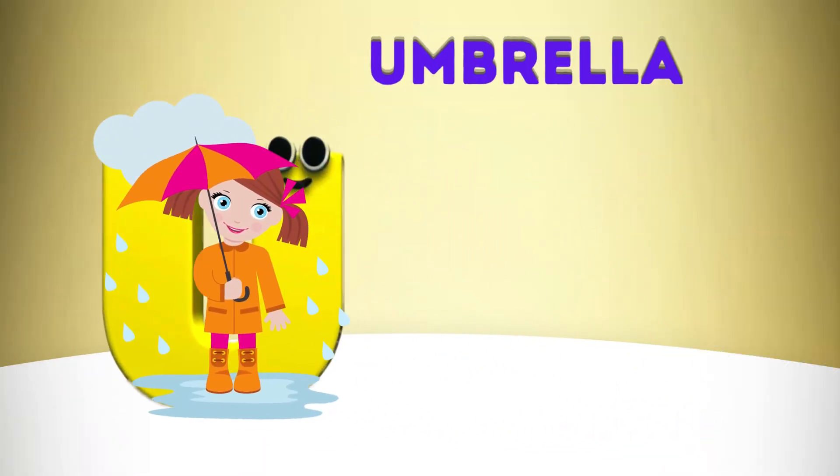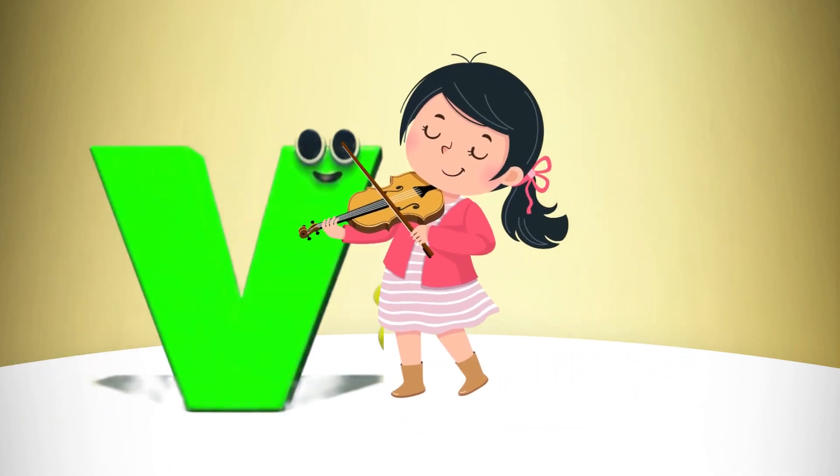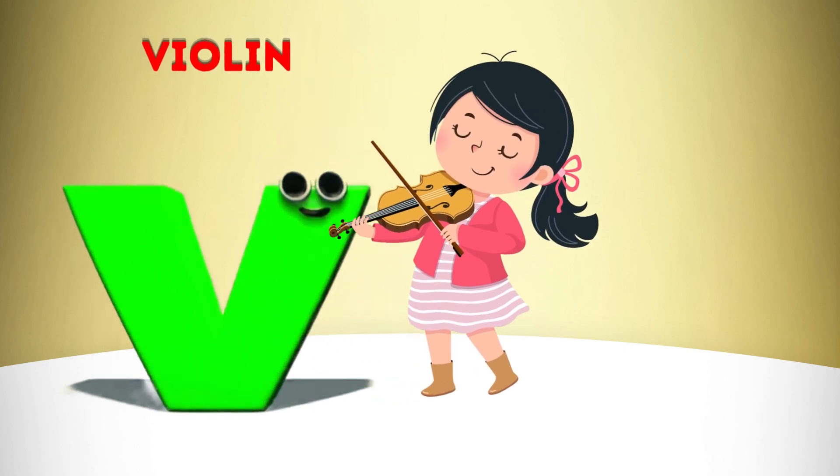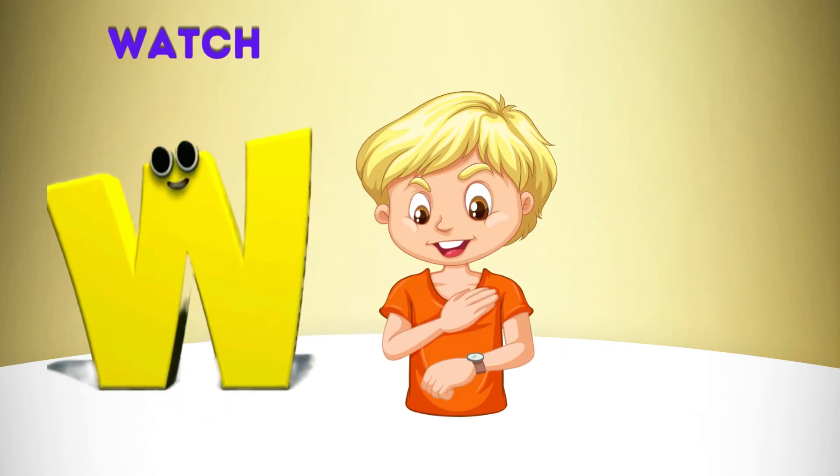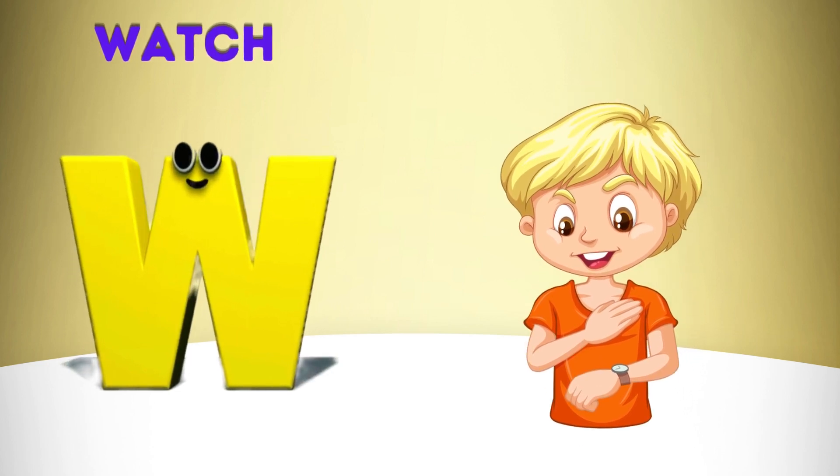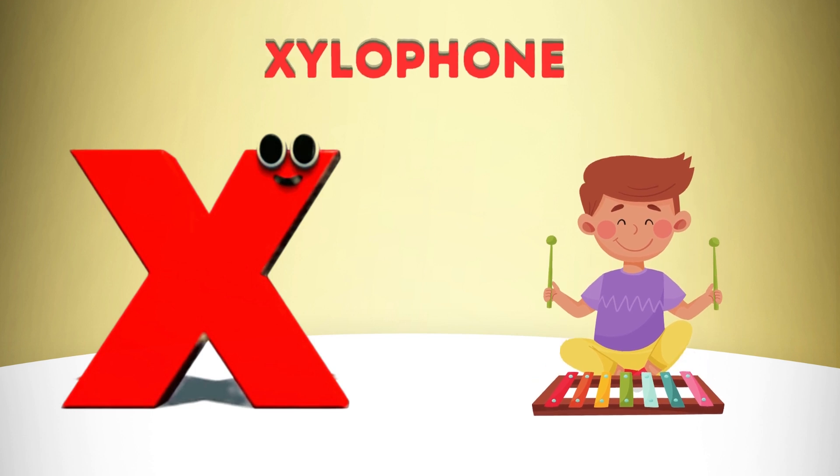U is for Umbrella, U-U-Umbrella. V is for Violin, V-V-Violin. W is for Watch, W-W-Watch. X is for Xylophone, X-X-Xylophone.